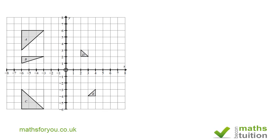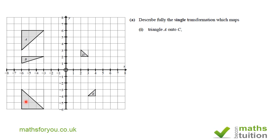Now, this is the first of the questions. It says: describe fully the single transformation which maps triangle A onto triangle C. One thing to notice here is that triangle A, which is the object, and triangle C, which is the image, are similar and congruent, because they've got the same area and the same shape. Now, I'm going to join the equivalent points on each triangle.